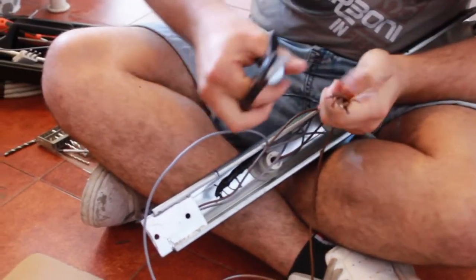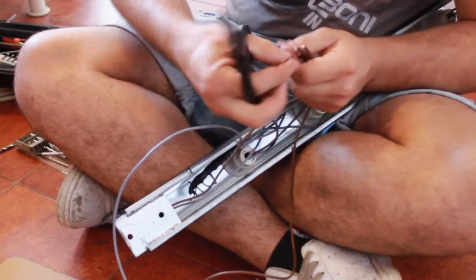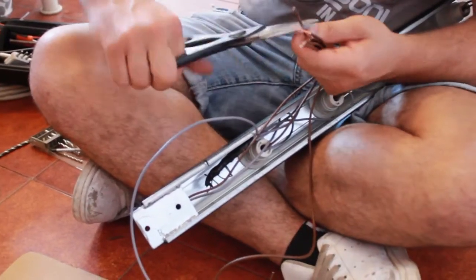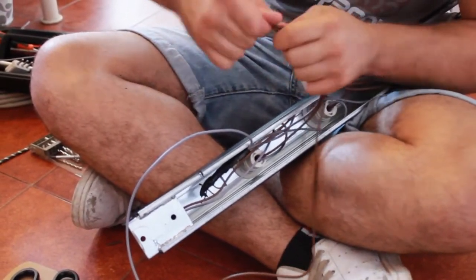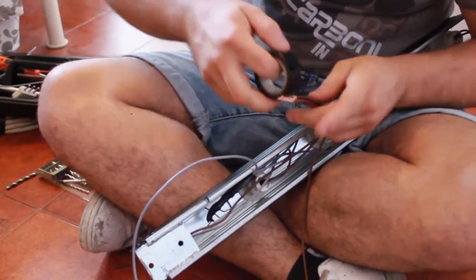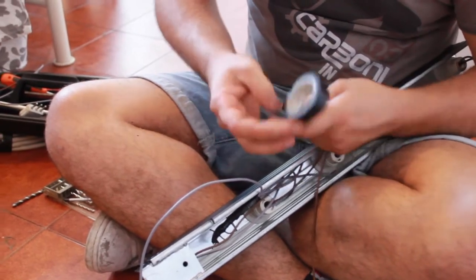For every single wire, remove 2 cm of the insulating plastic and twist them all together and cover it completely with insulating tape.